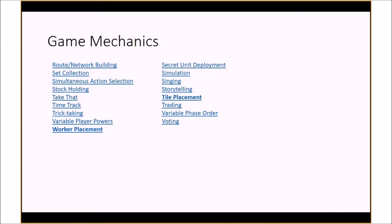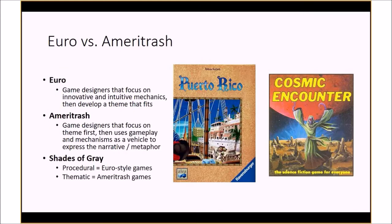Settlers of Catan — what's a mechanic from that game? Bidding and trading is a big part: two sheep for one wood. You're also building out settlements on a map. But that's a classic Euro game because there's not much of a story there. Games kind of fall into two categories: Euro trash and Ameritrash. Your game is either thematic — you're going to save the world from an alien race — or it's mechanical.